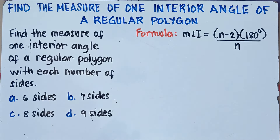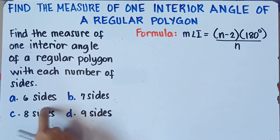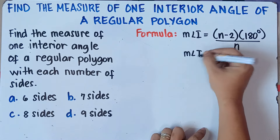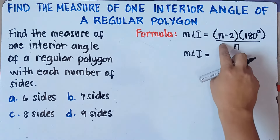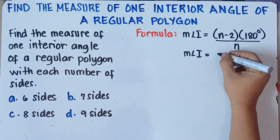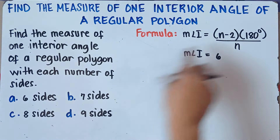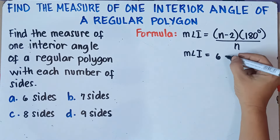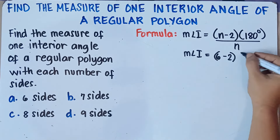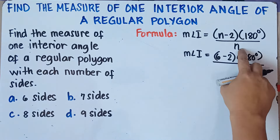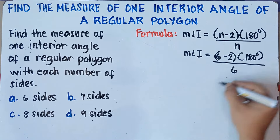Let's start with letter A. We have 6 sides, and we need to find the measure of one interior angle of this regular polygon with 6 sides. So we substitute n equals 6 into the formula: (6 minus 2) times 180 degrees, over 6.